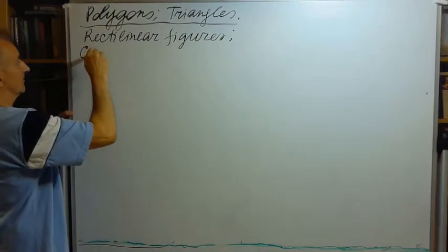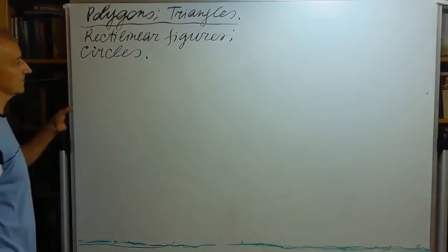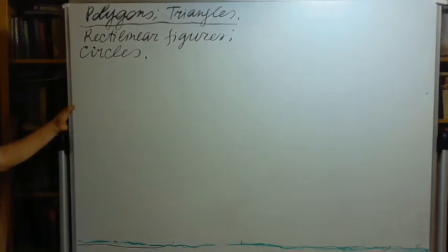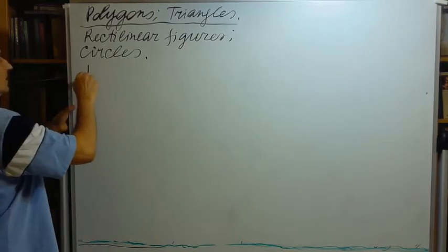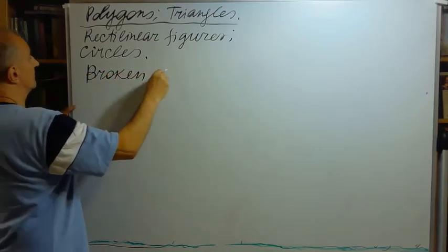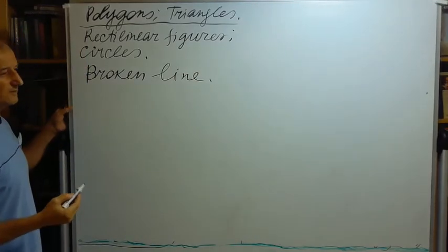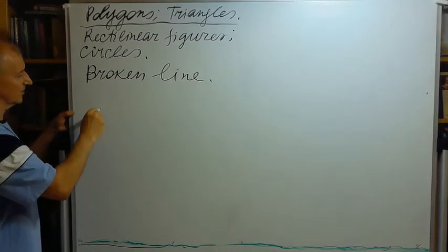And circles, and maybe of course part of the circles. One of the basic notions here is a broken line. I don't think I have to write all the definitions, they're written in the table. What is a broken line?